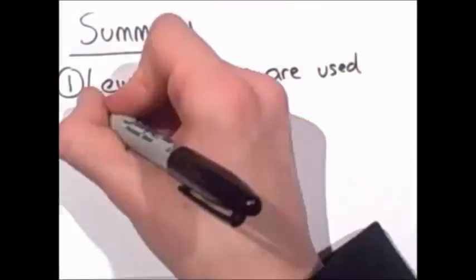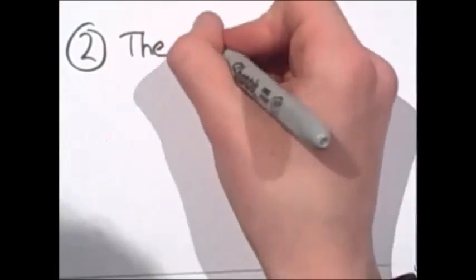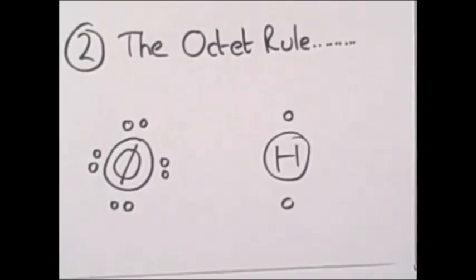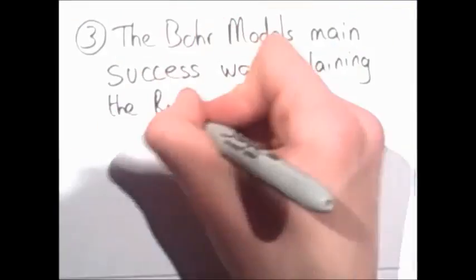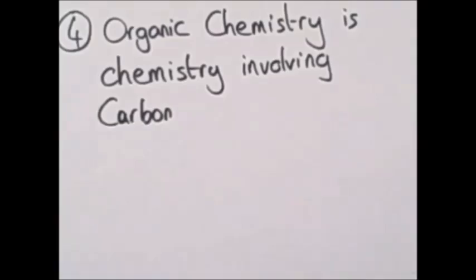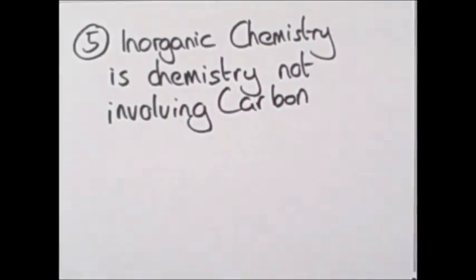Summary: 1. Lewis structures are used to represent covalent bonds. 2. The octet rule states that an atom in a molecule would be stable when it has eight electrons in the outer shell, with the exception of hydrogen. 3. The Bohr model remains successful in explaining the Rydberg formula. Organic chemistry is chemistry involving carbon atoms. Inorganic chemistry is chemistry not involving carbon atoms.